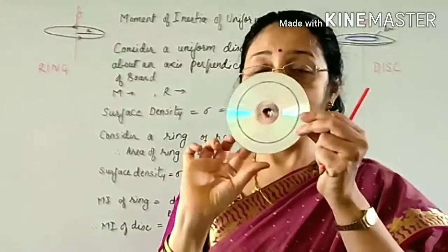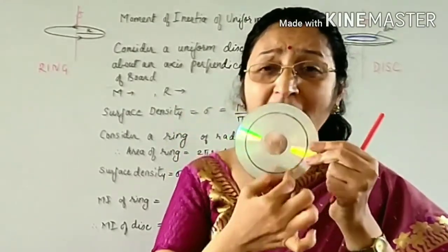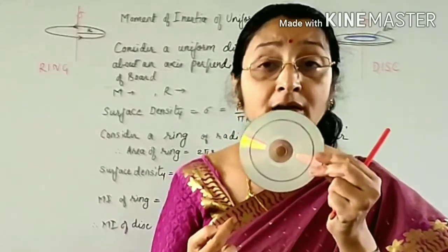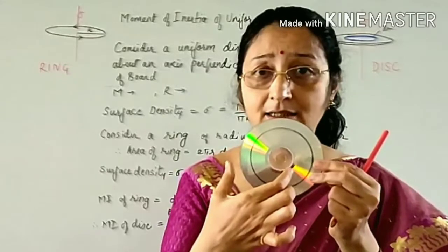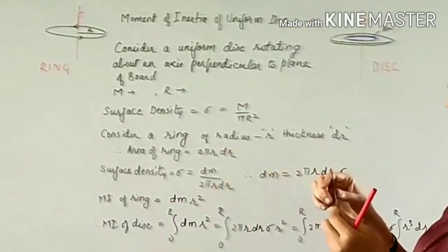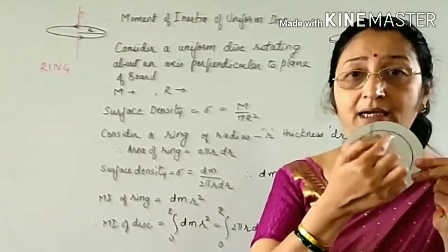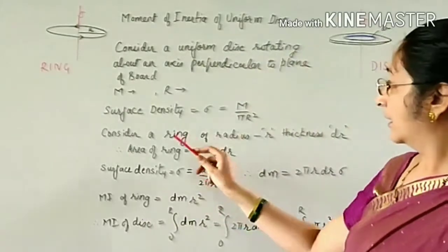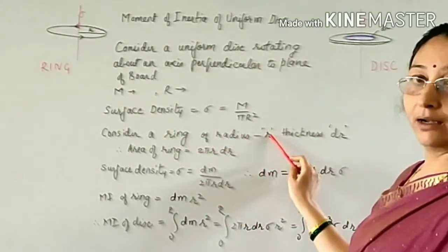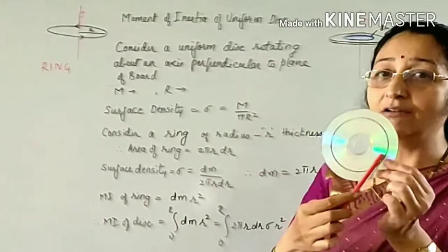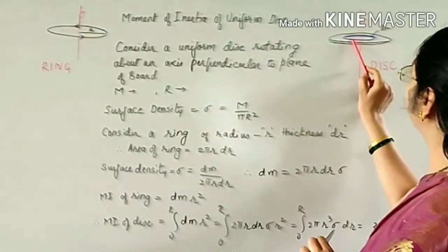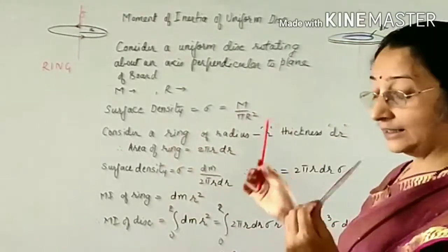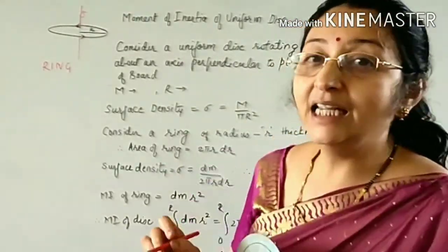To find the moment of inertia of this uniform disc, we note that the disc is made up of fine concentric rings having different radii. We consider one such ring having radius r (small r), and let the thickness of this ring be dr.